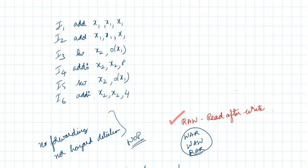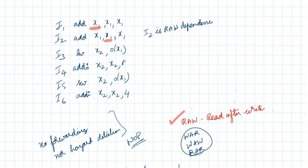We have to identify which instruction is dependent on which. In the first instruction, x1 is written — the sum of x1 plus x1 is written into x1. In the next instruction we are reading x1. So I2 is a read-after-write dependency on I1 for the x1 register.